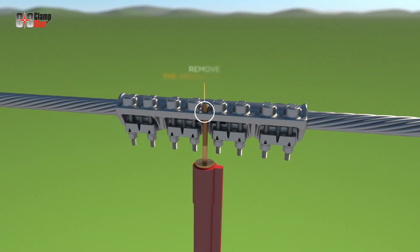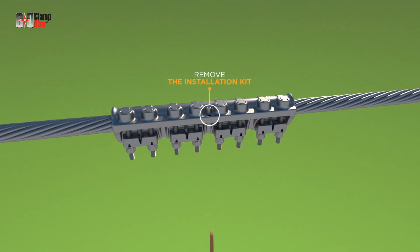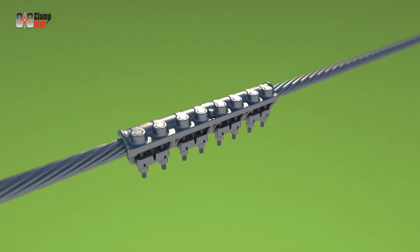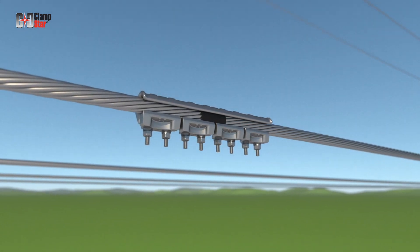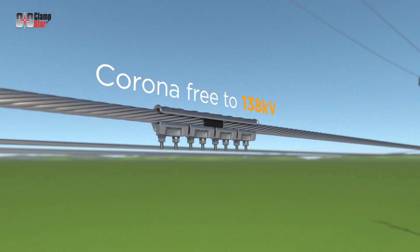Once installation is complete, be sure to remove the installation kit for use in future installations. This conductor is now corrected. Distribution class connectors are corona-free to 138 kV.